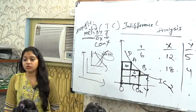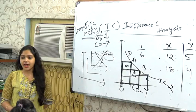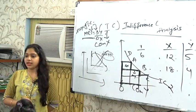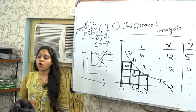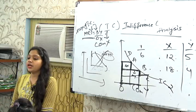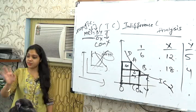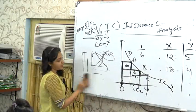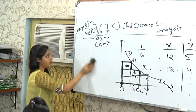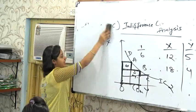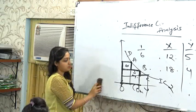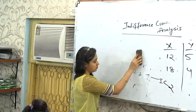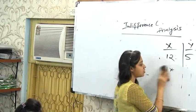To summarize the three properties: First — higher is the indifference curve, higher is the level of satisfaction. Second — indifference curve is downward sloping because the consumption of two commodities is inversely related. Third — indifference curve is convex to the origin because of the law of diminishing marginal rate of substitution of X for Y. MRS formula is delta Y by delta X, and MRS is also known as the slope of the indifference curve.